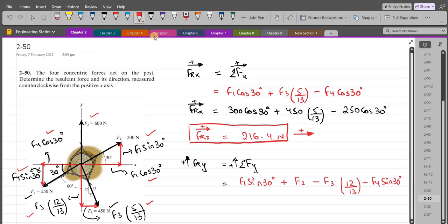Substituting the known values, we have FRy equals F1 sin 30, which is 300 sin 30 degrees, plus F2, which is 600 Newtons.